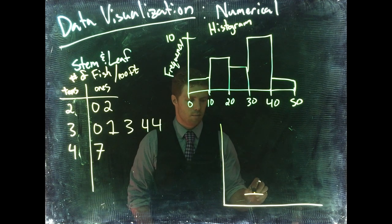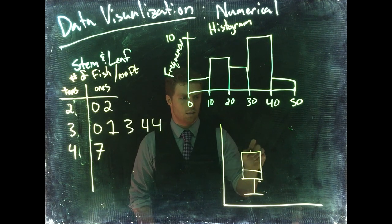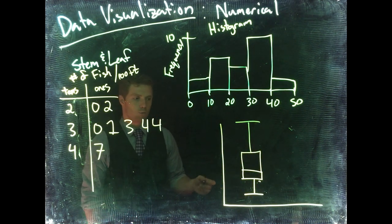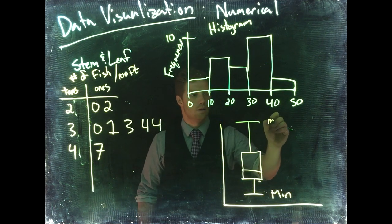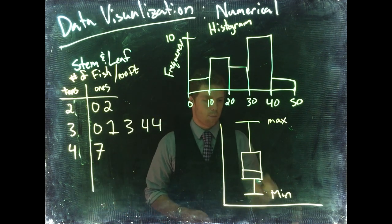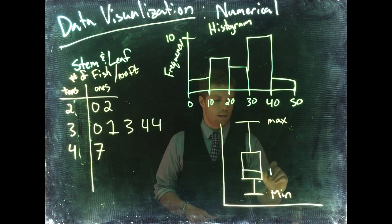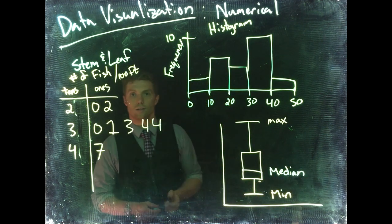Box plots are a quick way to summarize how our data looks. Sometimes they're done vertically, sometimes they're done horizontally, but they're the same concept. We're going to work on them vertically. So we start with our minimum, and then we come up and we do another box, and we do another box, and we do another line. This bottom is our minimum, the top is our maximum, and then our middle, we've got three values in the middle. The very middle one is our median, or the middle value of all of our data.